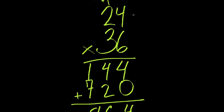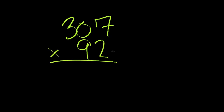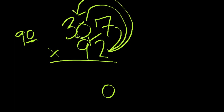That was two digits in each spot. Let's increase the difficulty and have three digits in one of these. This time I'm going to have 307 multiplied by 92. I begin with two times seven, then two times zero, then two times three. After that, I'll put a zero here to scoot the nine over, since it's really 90, then nine times seven, nine times zero, nine times three. Let's walk through it.